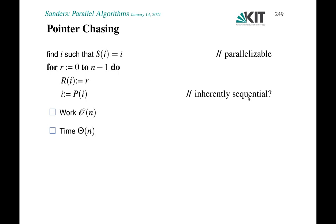Let's first look at a sequential algorithm for list ranking. We first identify the last element, which we can do in parallel. In that description, I am chasing backwards using the P pointers, iterating over a variable R that gives the current rank or distance from the end, which is initially 0 and at the end is n minus 1. We simply assign the rank of the reached element to R, and then set I to the predecessor of I. I think this is really inherently sequential. It has work order n, but of course it's also time theta n.